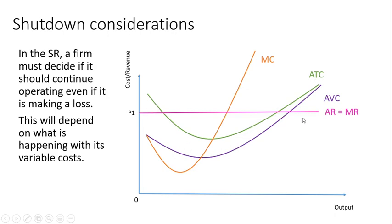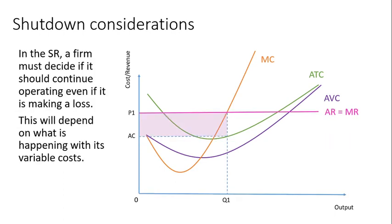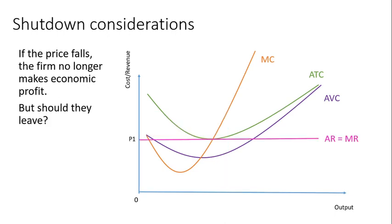If you're making profit, the conclusion is: keep going, live long and prosper, because you're making some money and there's no question about shutting down. If the price falls and you don't make any economic profit, should firms leave? No — if you're making zero economic profit, your abnormal profit is zero but you're still making normal profit, covering your opportunity costs. You're kind of indifferent to leaving: whether I make 20,000 in the apple business or teaching economics doesn't matter, so I might as well stay.